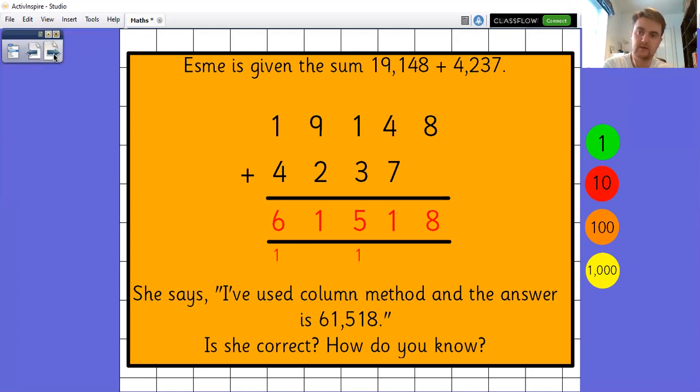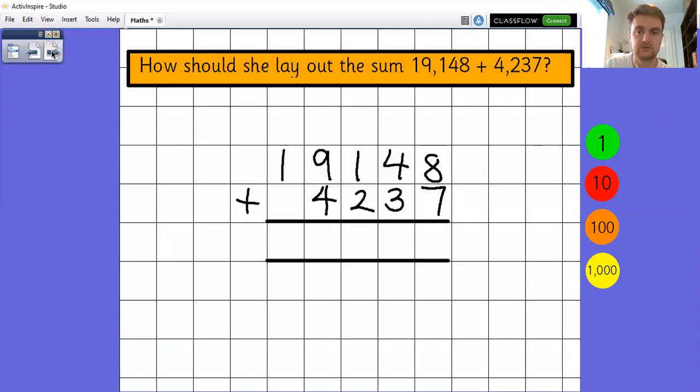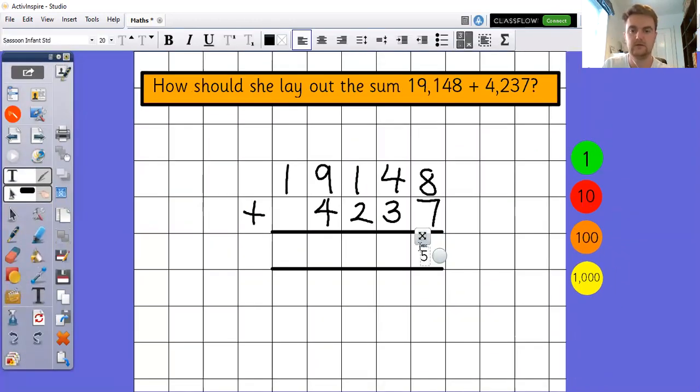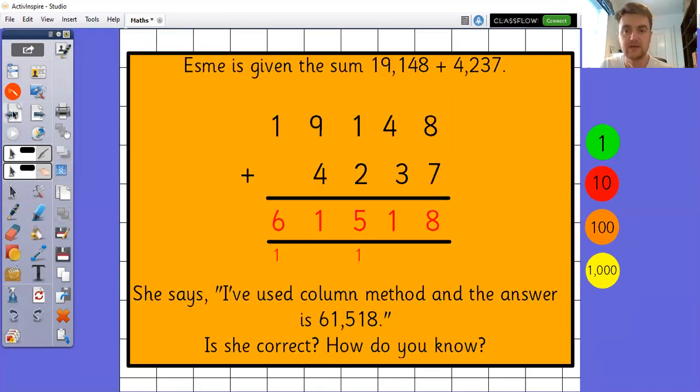Okay. Hopefully you all notice that when she's laid out the column method, she doesn't have the 1s in the same column. So 4,237 has got 7 1s, 3 10s, 200s, and 4,000s. But 19,148 has got a 10,000s column, which 4,237 has a 0 of. So we need to move it across. She's done everything else correctly in terms of she started from over here, but she hasn't laid it out correctly. So she can't have the right answer. So if I come across, I can see that 8 plus 7 is 15. So my 5 goes in there. My 1 goes there. 4 plus 3 is 7 plus the 1 is 8. 1 plus 2 is 3. 9 plus 4 is 13. And then 1 plus 0 is 1 plus the other 1 is 2. So I should end up with 23,358. So she was quite a long way from the correct answer, even though she only made one small mistake. So that's why we need to be really careful when we are setting out the column method.